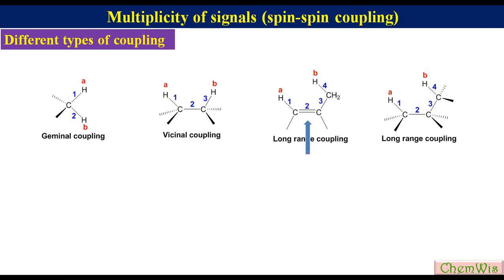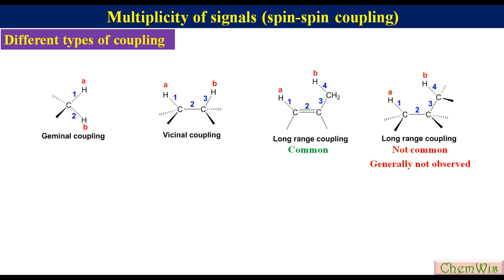Four-bond coupling in which one of the four bonds is a double bond is very common, while the coupling between two hydrogens separated by four sigma bonds is not very common and generally not observed. These are observed only in some rigid systems. The spin-spin splitting of NMR signals gives us exact information about the number of neighboring protons, which is very useful in structural analysis.